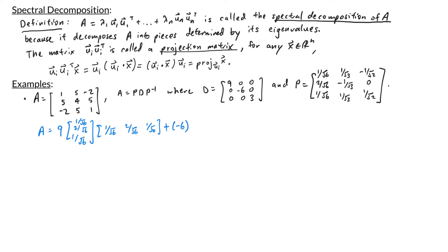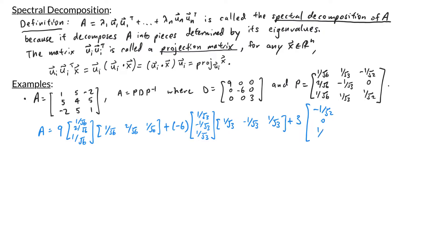The second term is -6 times the second eigenvector [1/√3, -1/√3, 1/√3] times its transpose [1/√3, -1/√3, 1/√3]. And lastly, we add +3 times the third eigenvector [-1/√2, 0, 1/√2] times its transpose [-1/√2, 0, 1/√2].